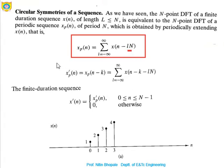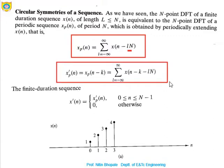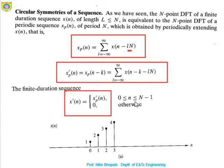Next is xp'(n), which is the shifted version of xp(n). For this, there is an additional sequence x'(n) defined in terms of xp'(n), bounded for the region 0 to N-1 and zero elsewhere. So for x(n), if it is bounded for the region 0 to 3 only, those are the sample values for x(n).